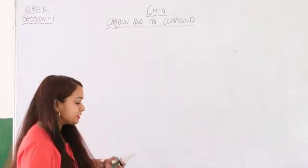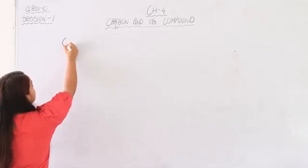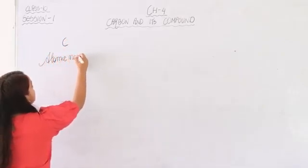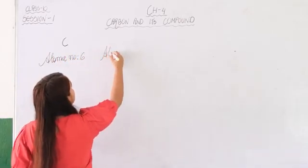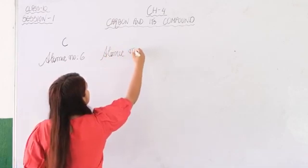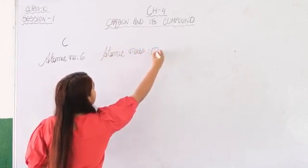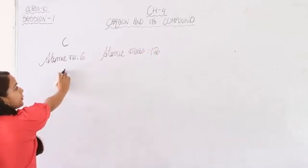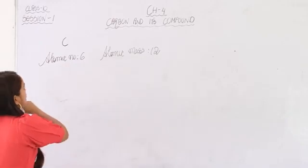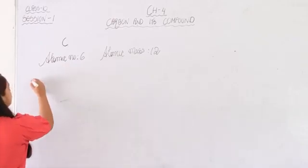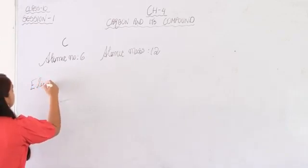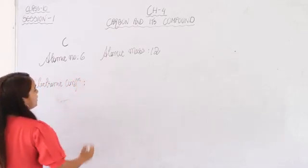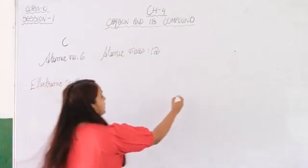Carbon is represented by the symbol capital C. Its atomic number is six and atomic mass is 12. If you have gone through the element table I gave you previously, atomic number and atomic mass will not be a problem. Now let's see the electronic configuration of carbon.